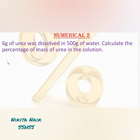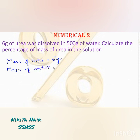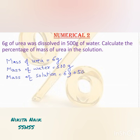Here is the solution. Mass of urea is equal to 6 gram. Mass of water is given to us, that is equal to 500 gram. So we need mass of solution, which will be equal to mass of urea plus mass of water, which will be 6 gram plus 500 gram, which gives us 506 grams.